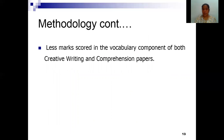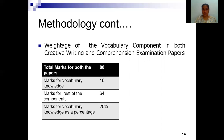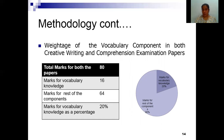Finally, it was understood that fewer marks were scored both in the comprehension and creative writing papers under the vocabulary component. An analysis of the entire paper showed that 20% of the total mark was allocated for vocabulary or word knowledge.